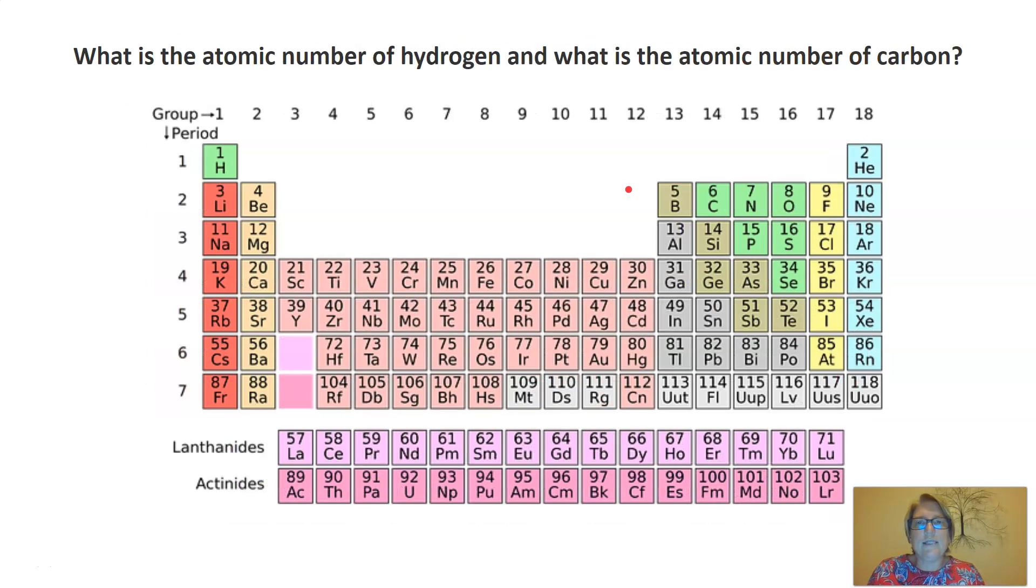What is the atomic number of hydrogen, and what is the atomic number of carbon? Well, the atomic number of hydrogen is one, and the atomic number of carbon is six.